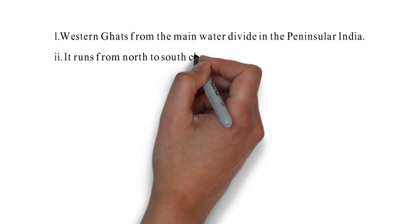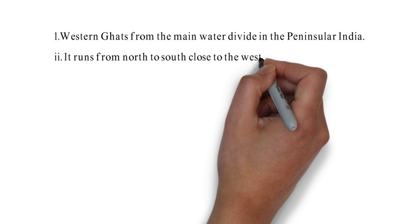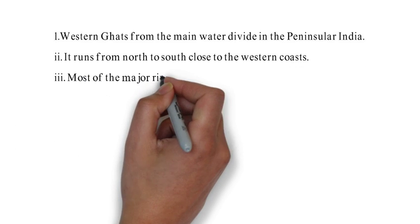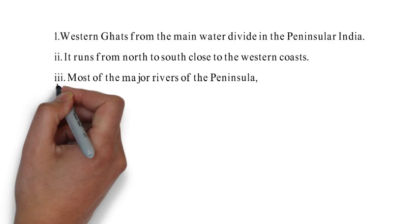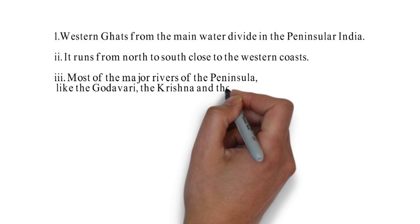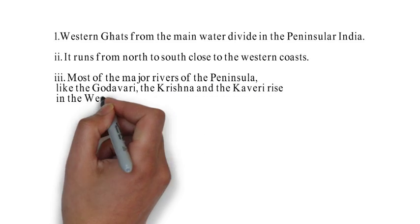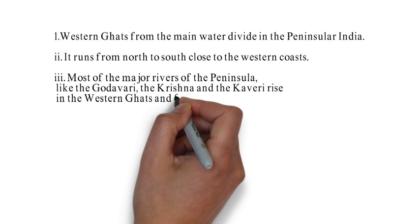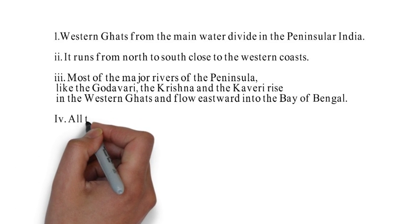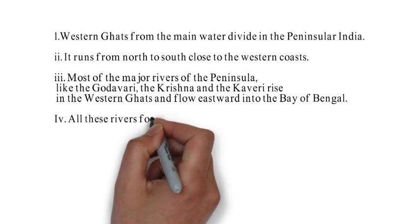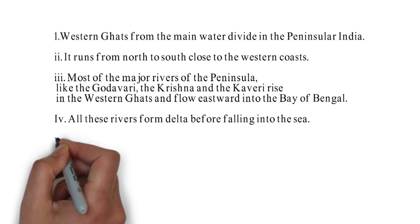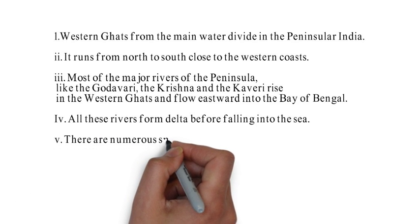Now let us have quick facts related to the peninsular river system. Peninsular rivers are much older than the Himalayan river system. Most of the rivers originate in the Western Ghats, which acts as the main water divide in peninsular India. This causes most major rivers like the Godavari, the Krishna, and the Kaveri to rise in the Western Ghats and flow eastward into the Bay of Bengal.